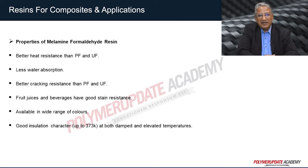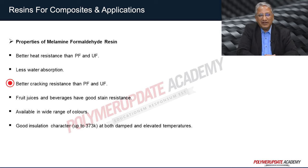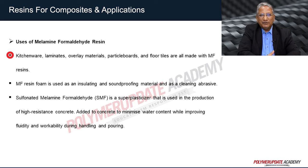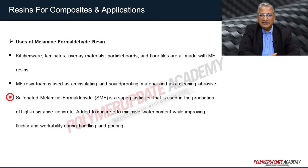Properties of melamine formaldehyde resin include better heat resistance than phenol-formaldehyde and urea-formaldehyde, lower water absorption, and better resistance to cracking. It also gives good stain resistance towards fruit juices and beverages, is available in a wide range of colors, and provides good insulation up to 373K at both ambient and elevated temperatures. Melamine formaldehyde resins are used for kitchenware, laminates, overlay materials, particle boards, and floor tiles. Melamine formaldehyde foam is used as insulating and sound-proofing material. Sulfonated melamine formaldehyde (SMF) is used as a superplasticizer for making high-resistance concrete, reducing water content while increasing fluidity and workability during handling and pouring.